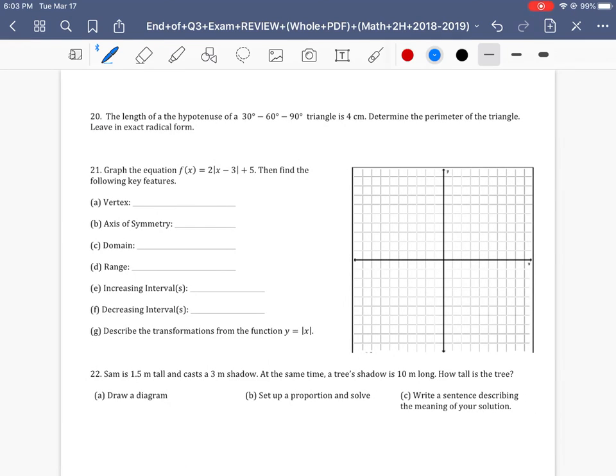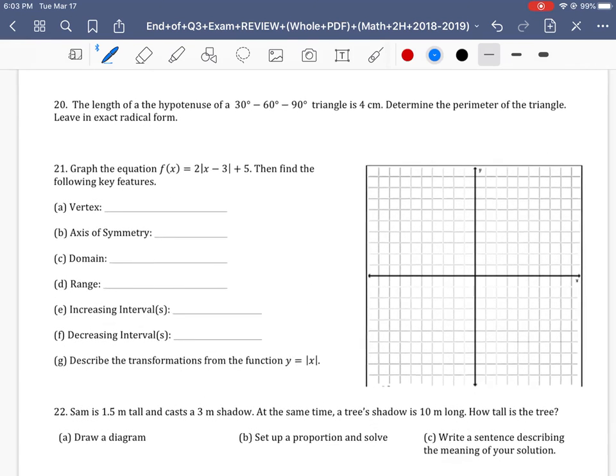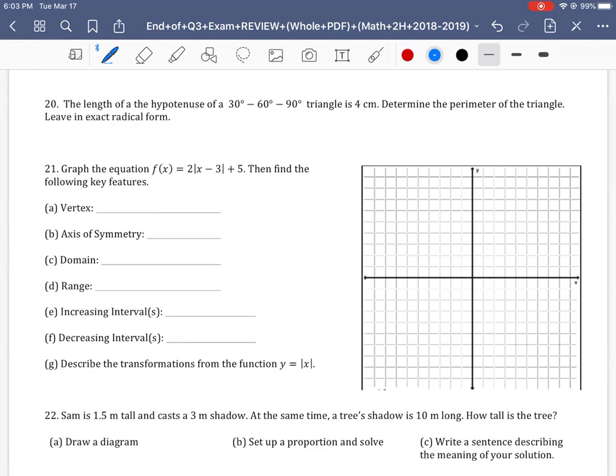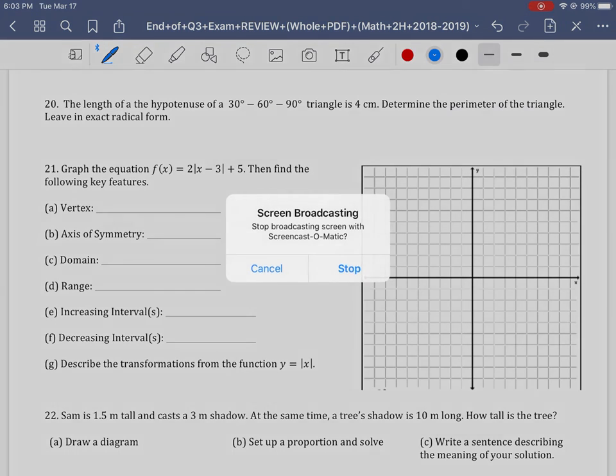Alright, let's see if we can make it through another one. On the next page, we're looking at the length of the hypotenuse of a triangle is 4 centimeters. Determine the perimeter of the triangle. Leave in exact radical form. Now, my math to honors students, yours needs to be in exact radical form. My math to students, you're welcome to write this as a decimal. If we look at this piece right here, we're looking at the length of the hypotenuse. This is going to take a while.